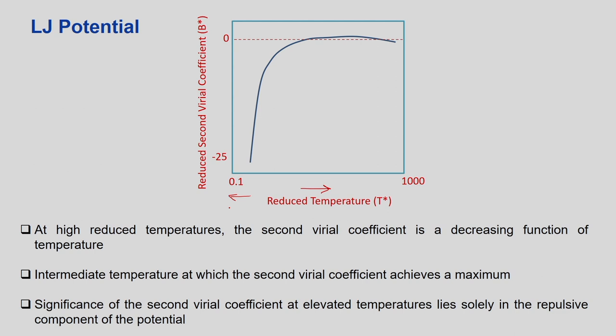The left-hand side of the plot implies lower temperature, which occurs when molecules are far apart. At lower temperature, attractive forces come into play and you have negative values of the reduced second virial coefficient. The LJ potential has both attractive and repulsive components, and at low temperature the attractive potential dominates. As we increase temperature and move to the right-hand side, the value crosses from negative to zero and then goes positive.